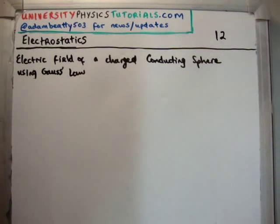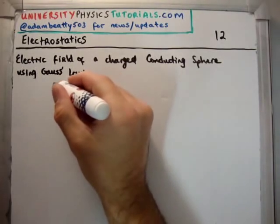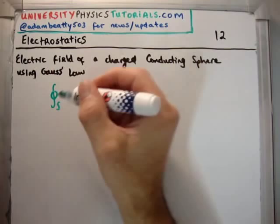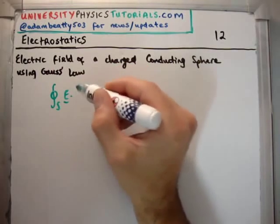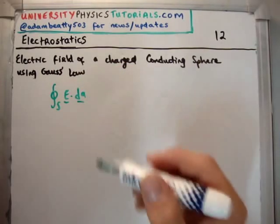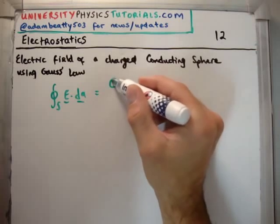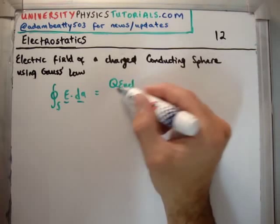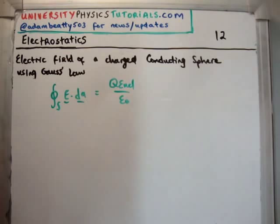First of all, I'm just going to write down Gauss's law. Gauss's law says the closed surface integral of your electric field, taken with the dot product of your infinitesimal surface area element, is q enclosed divided by epsilon zero.